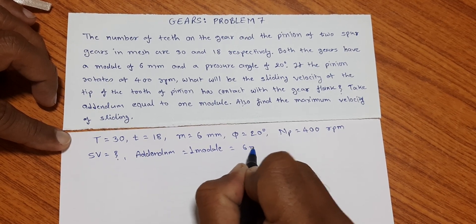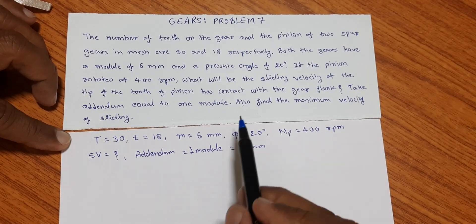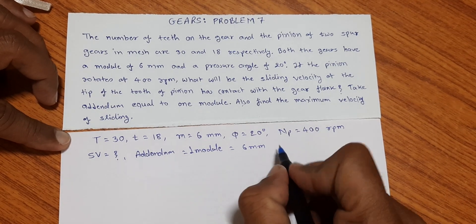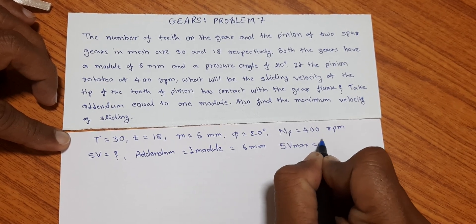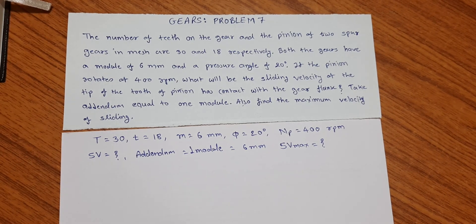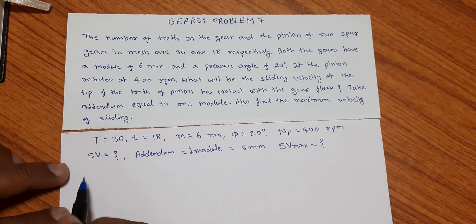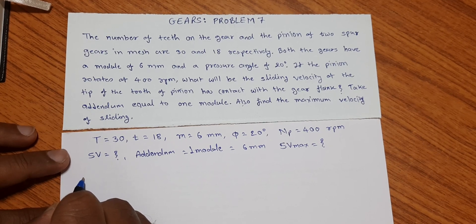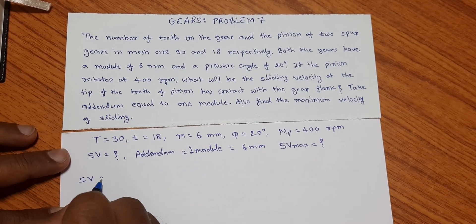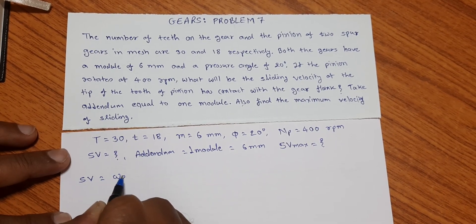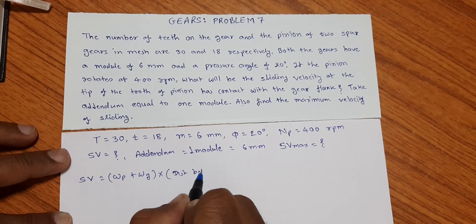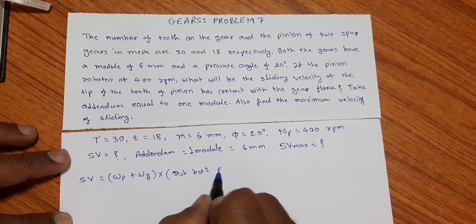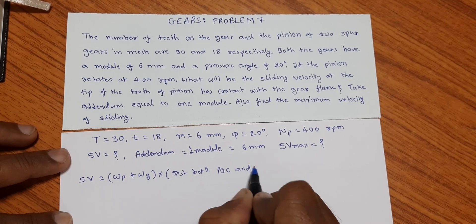We also need to find the maximum sliding velocity. The sliding velocity for a given gear pair is given by: sliding velocity = (ωp + ωg) × (distance between point of contact and pitch point).